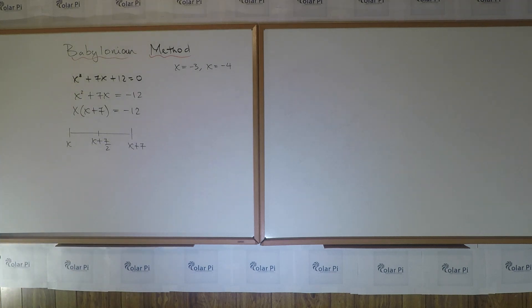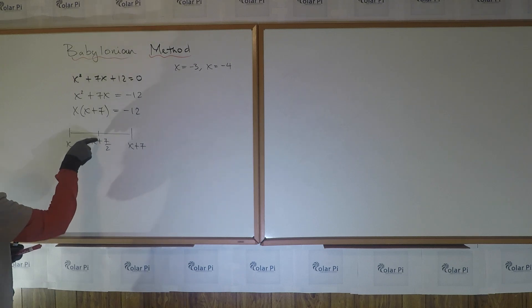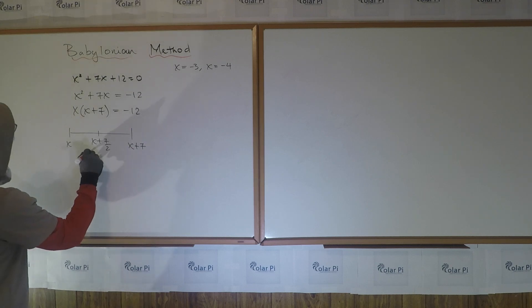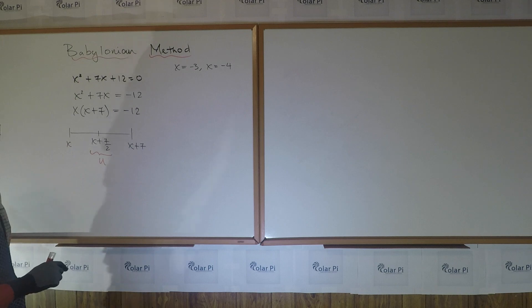So the next step in the Babylonian method is to take this midpoint, the average of these two guys, which is x + 7/2, and make a substitution. So let's call it u. So I'm saying u = (x + 7)/2.